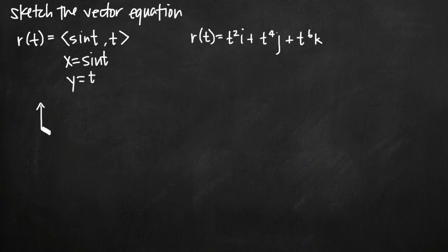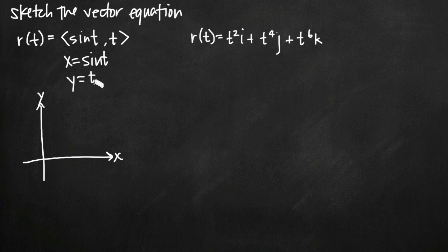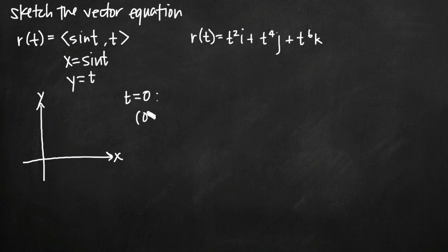Let's draw an x,y coordinate plane with the x axis and the y axis. I always like to use a parameter value of t equals zero as the starting point for my sketch. So I set t equal to zero and plug that into both parametric equations to find corresponding values for x and y. If t equals zero, x equals sine of zero, which is zero, and y equals zero. So when t equals zero, I'm at the coordinate point (0, 0). Let me go ahead and plot that point.